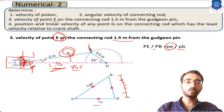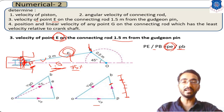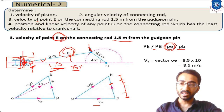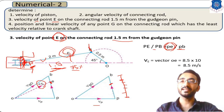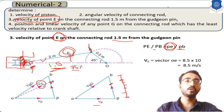By considering the ratio of total length PB divided by the length PE, you can locate point E on the velocity diagram. Using this equation and substituting the values, you get the location of point E. Now to calculate the velocity of point E, you must always calculate the absolute velocity.